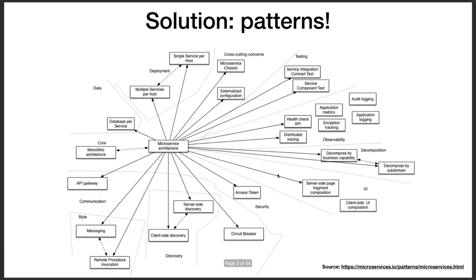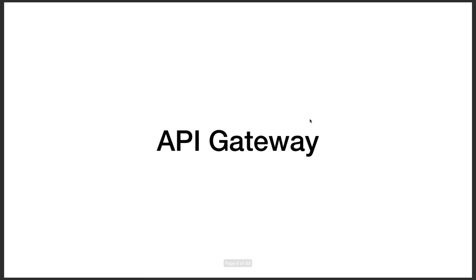This diagram comes from microservice.io and Wikipedia. The different microservice patterns include circuit breaker, access token, remote procedure invocation, divided into categories like data composition patterns, cross-cutting concerns, deployment patterns, communication patterns via API gateway, messaging or RPC, and discovery patterns — client-side or server-side. Observability covers tracking services using performance metrics, log metrics, application metrics, and audit logging.